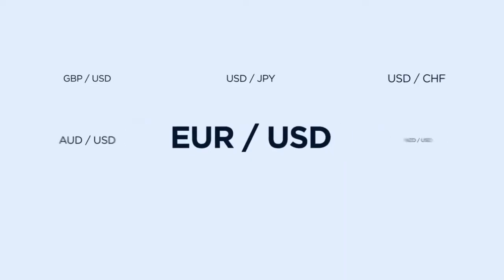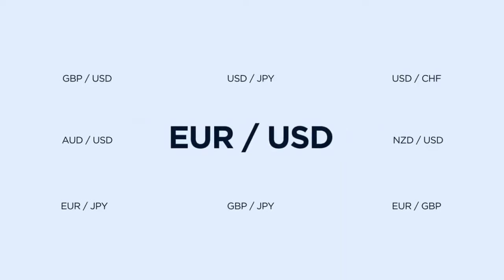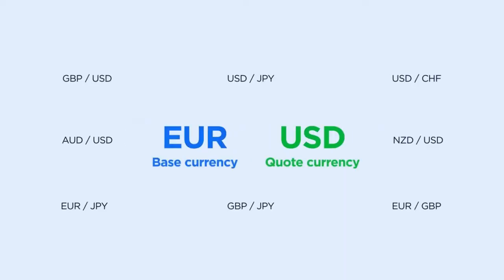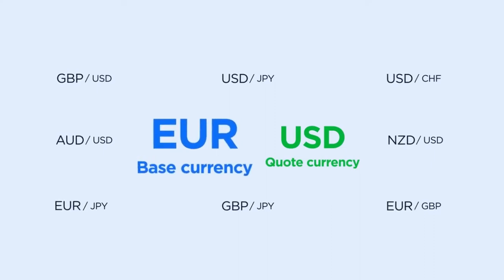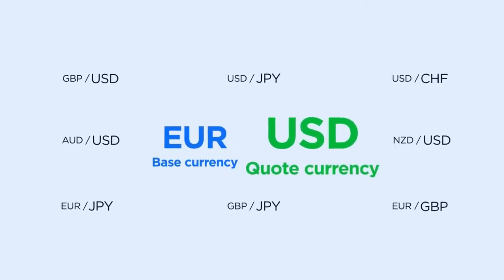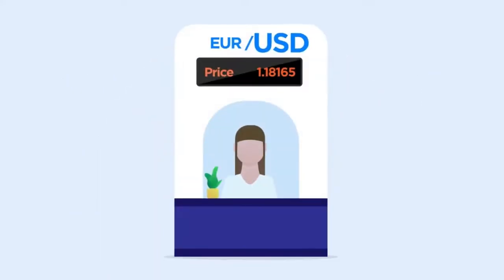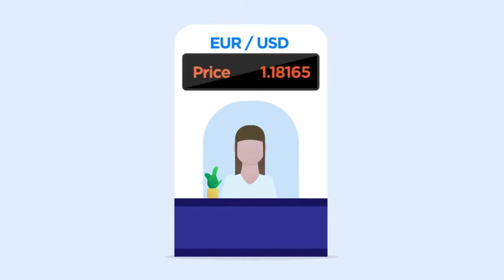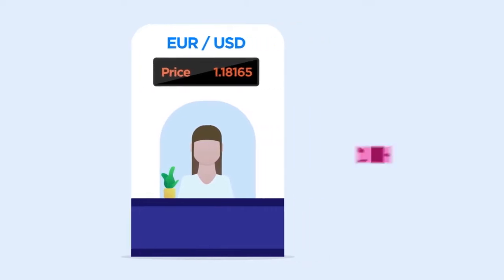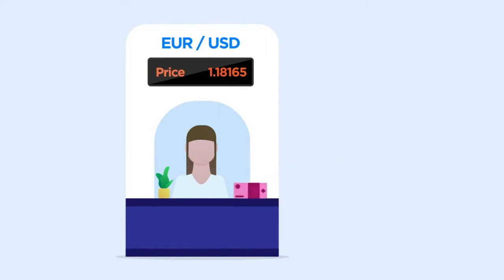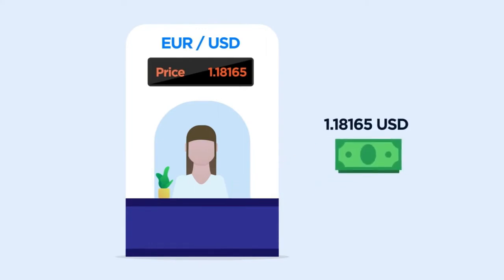Currency pairs. In the Forex market, currencies are quoted in pairs. The first currency in a pair is the base currency and the second one is the quote currency. The price of a pair indicates how much of the quote currency is needed to buy or sell one unit of the base currency. If the price of EURUSD is 1.1865, then to buy one euro you need to spend 1.18165 US dollars.